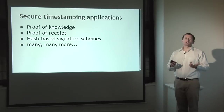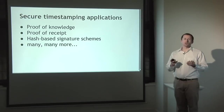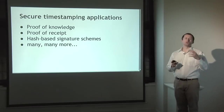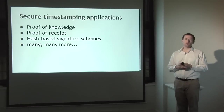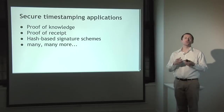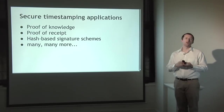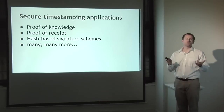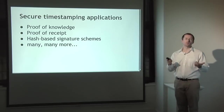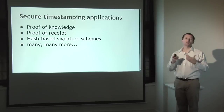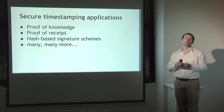The idea for secure timestamping with an append-only log is that we publish a commitment to X — the hash of X — and later on we reveal what X was. Anybody can look at this and say we must have known X at the time we published the hash, because there's no other way to have generated that data. One use is proof of knowledge: if we want to prove that some idea we file a patent on was actually in our heads months earlier, we can publish a hash of a design document, and later when we publicize the idea, anybody can look backwards and confirm we knew it earlier.